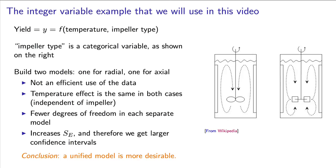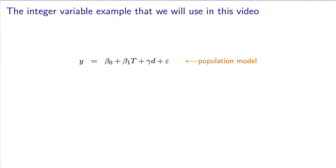Building a unified least squares model that incorporates this discrete nature of some of our input variables, such as radial versus axial impeller, is very desirable. One way we can do that is to include a new type of variable in our regression model, which we will call a coded variable, or an integer variable.